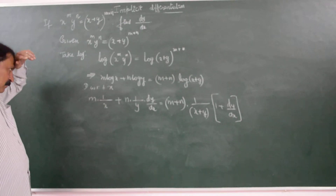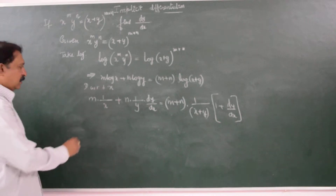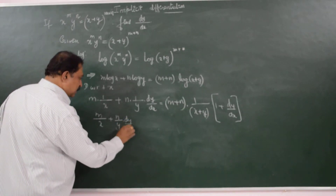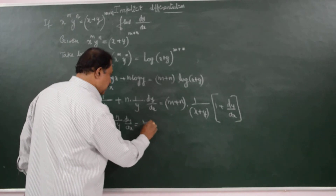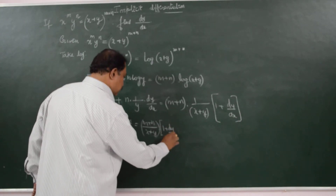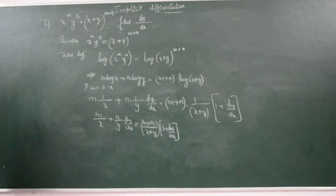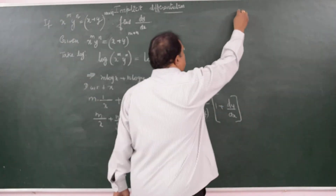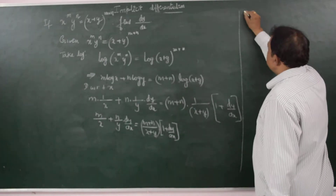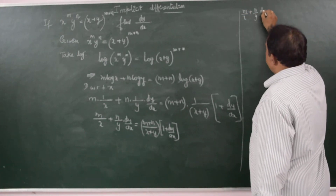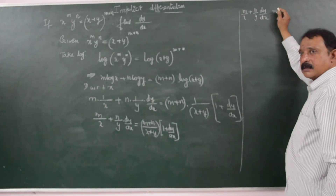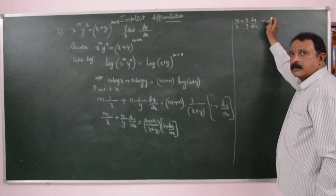Now let me collect dy by dx terms to one side and write it as: m by x plus n by y into dy by dx is equal to m plus n by x plus y into 1 plus dy by dx.